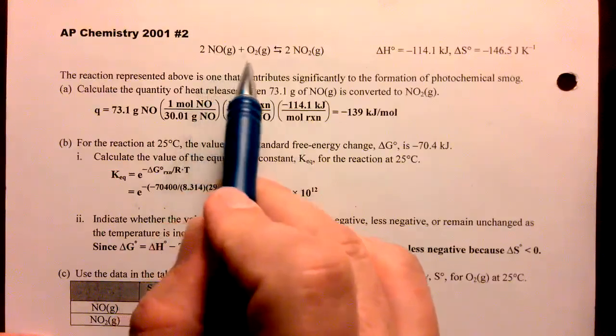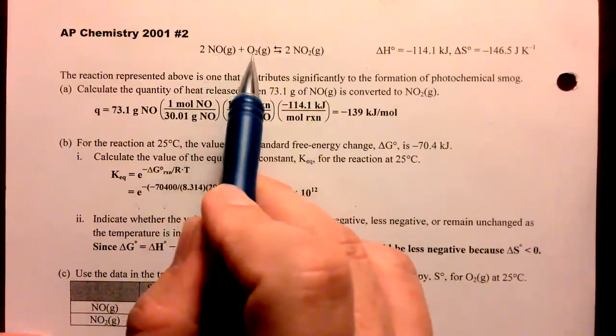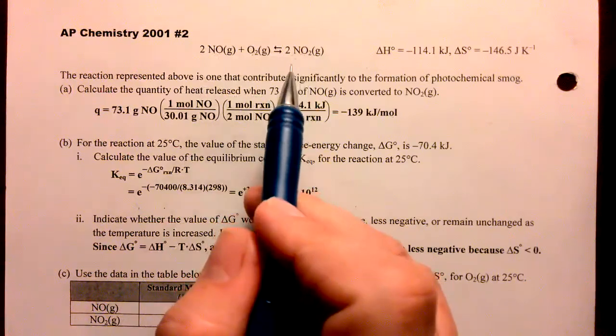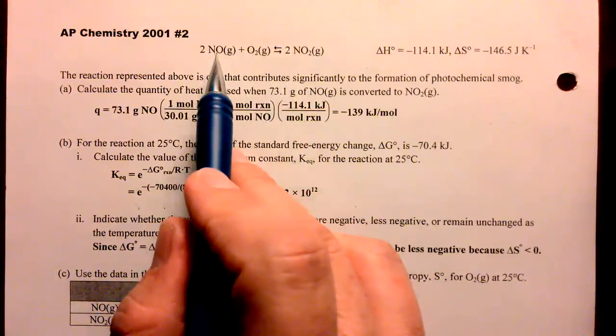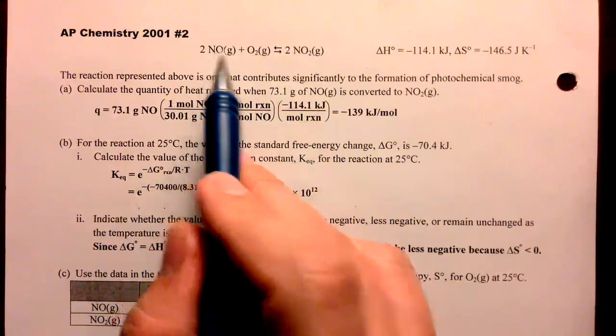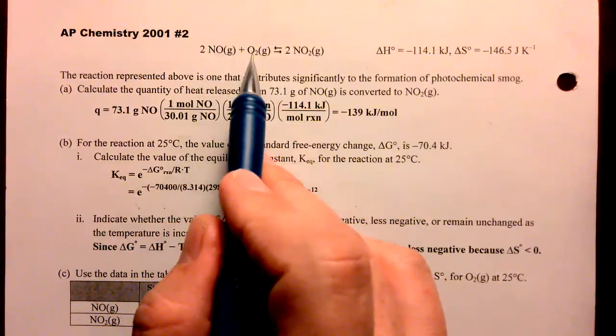And when we run this one mole of times, we're going to break two of these and one of those and form two of those, but we have to drill down a little farther. We're going to break two of these bonds, that's energy, and that's a positive value. One of these, that's energy, and that's a positive value.